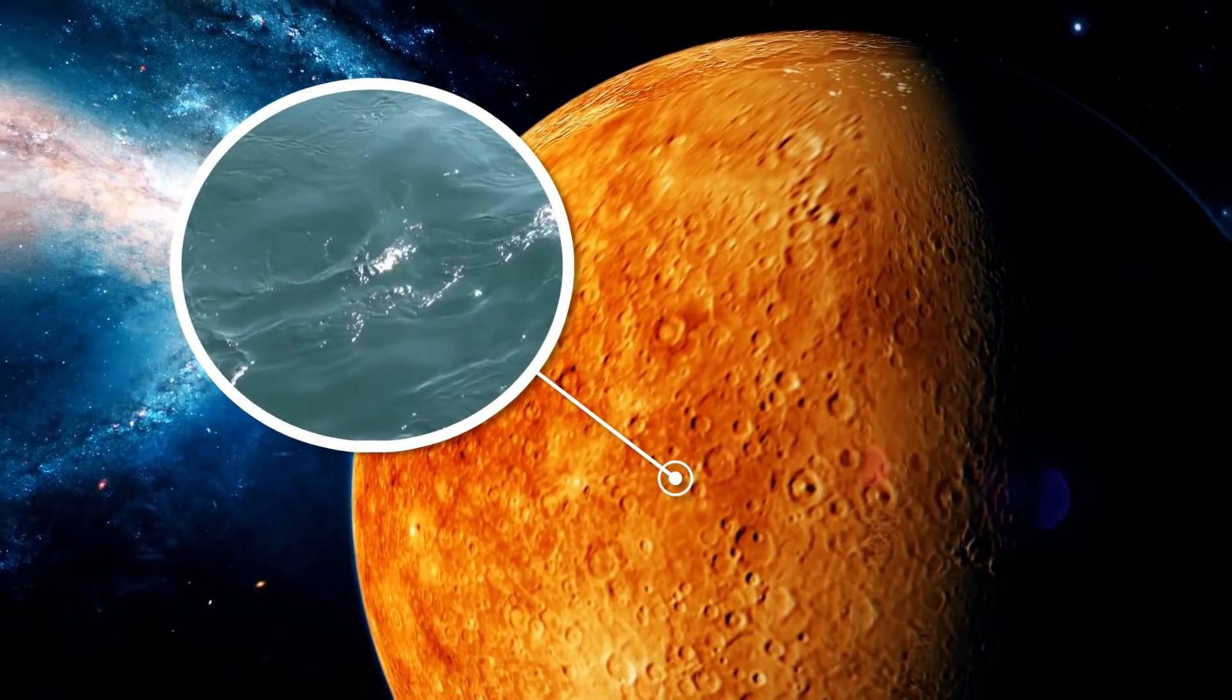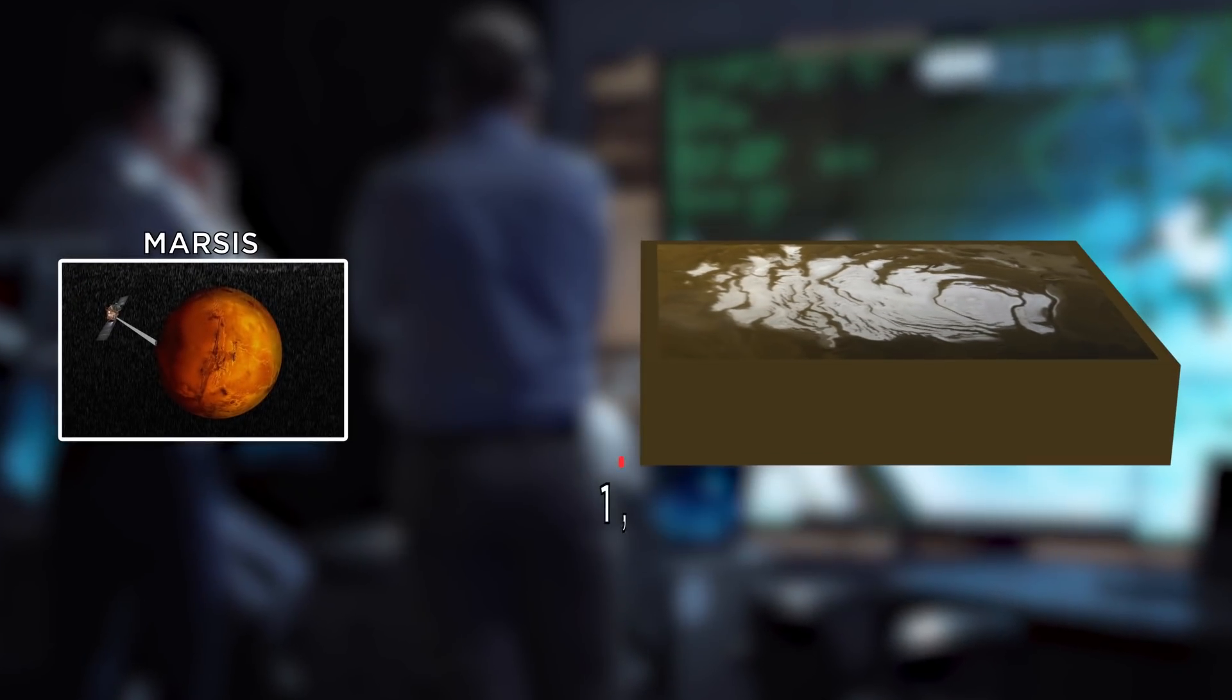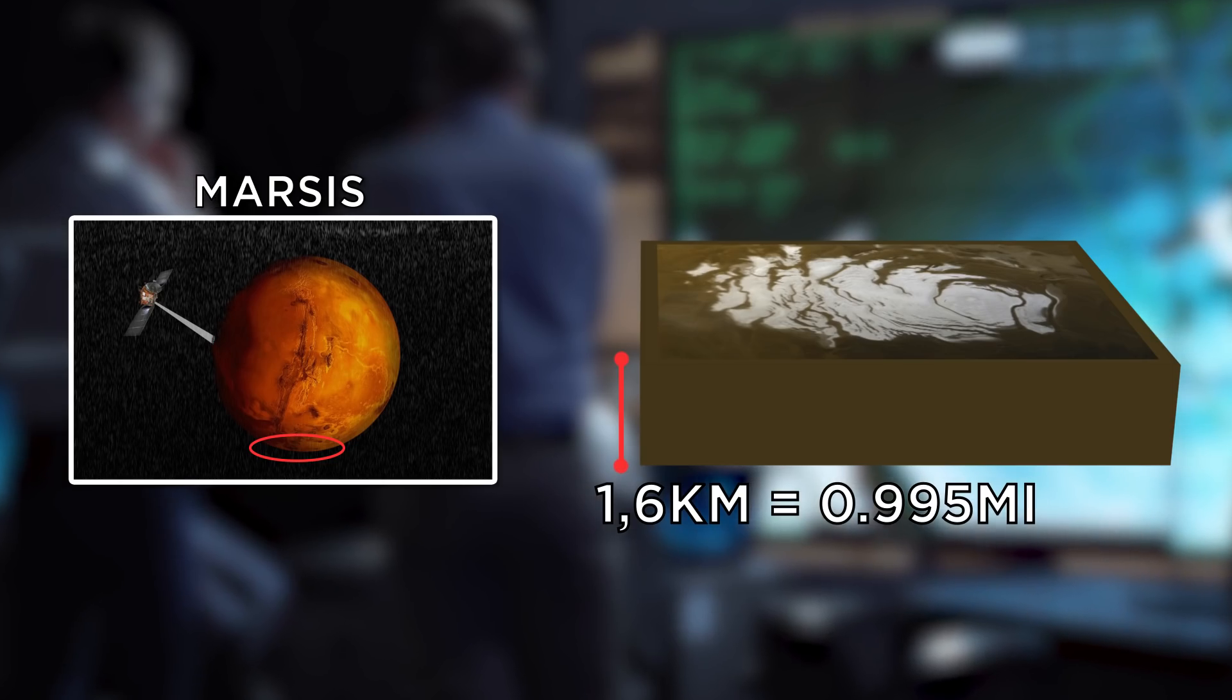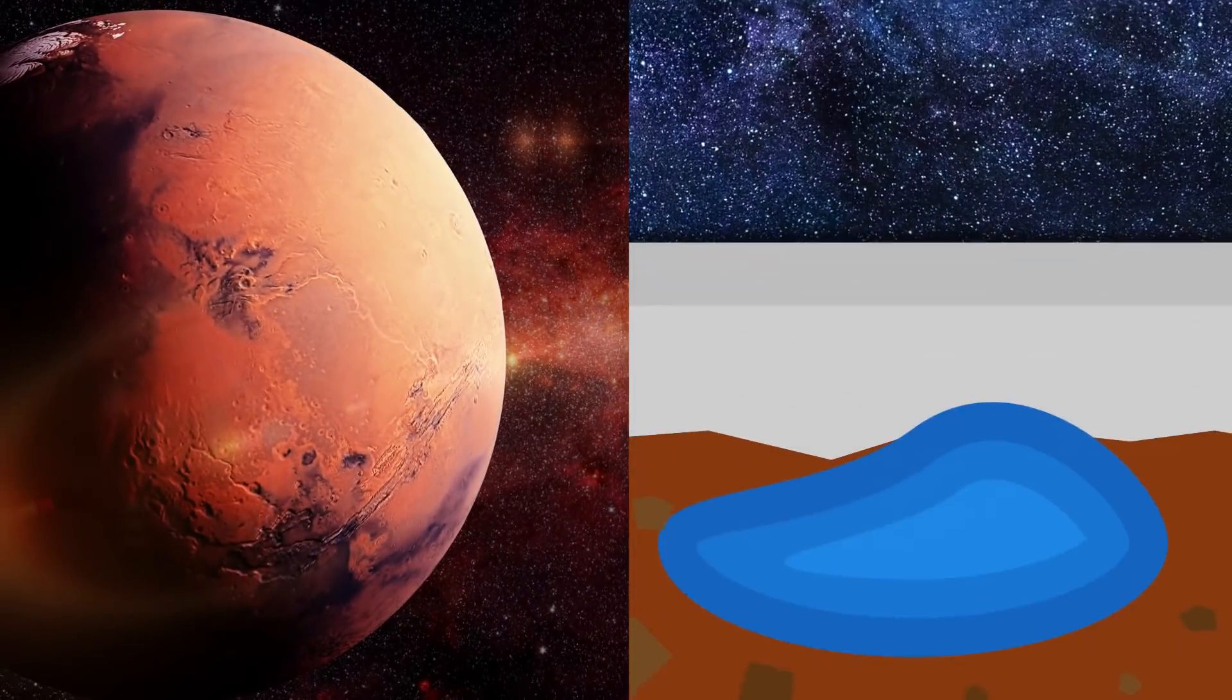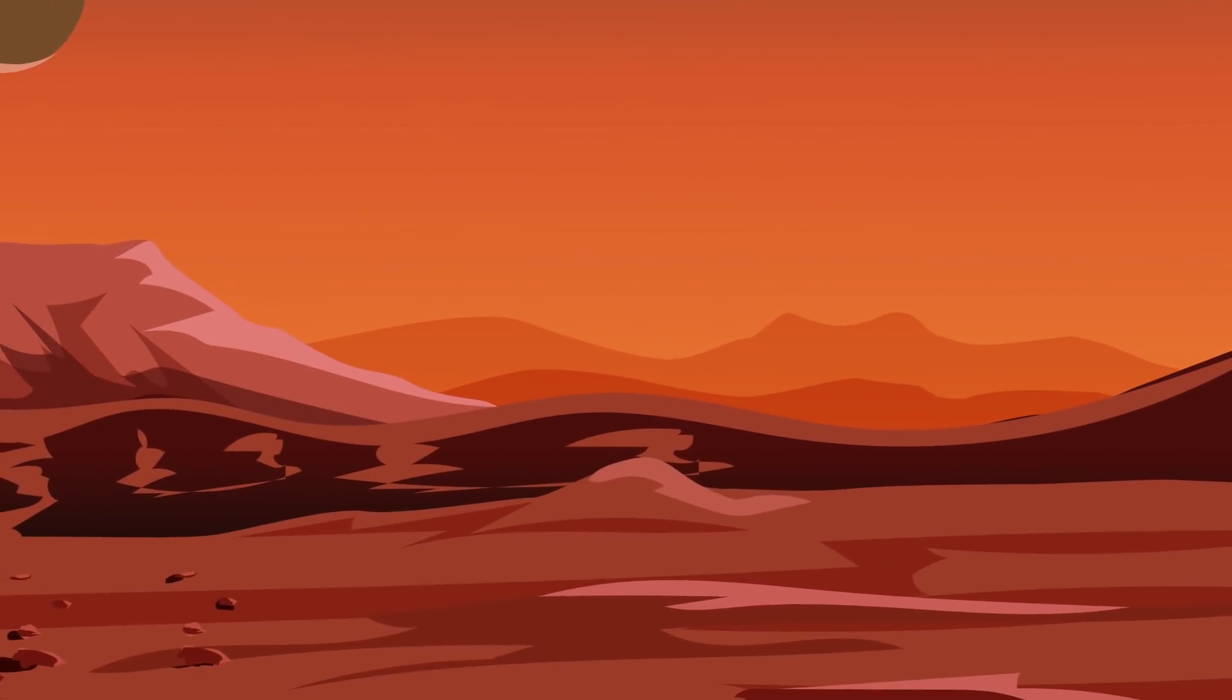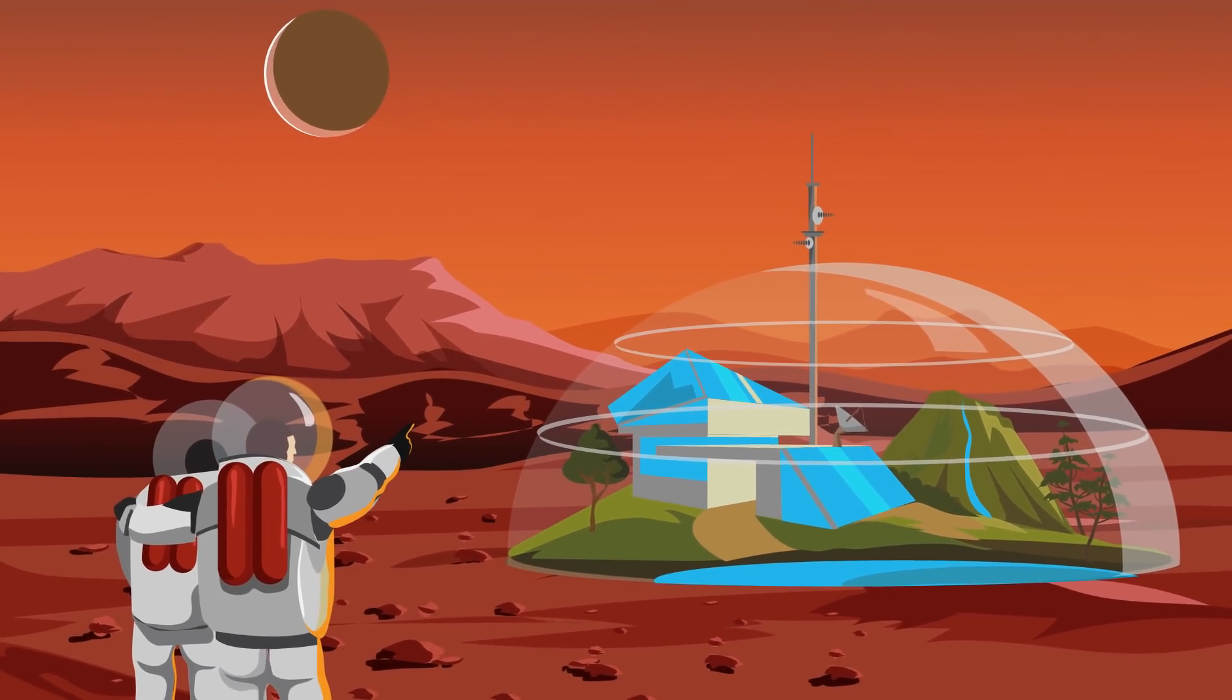It supported the notion that liquid water does still exist on Mars. The researchers used a radar called MARSIS to check what's underneath 1.6 kilometers of ice in the red planet's southern polar region, Planum Australe. Here, they detected what seems to be an underground lake 20 kilometers wide. If it turns out to be real, it will make Mars a more viable place for life to exist, and that includes human life.